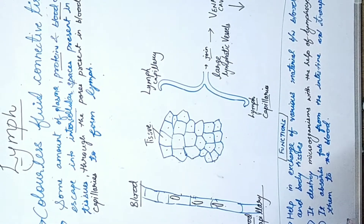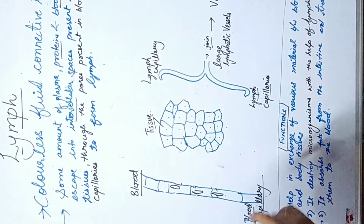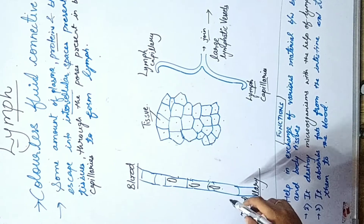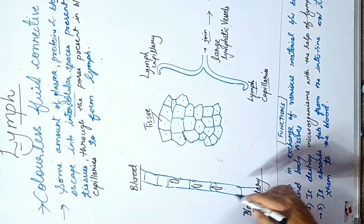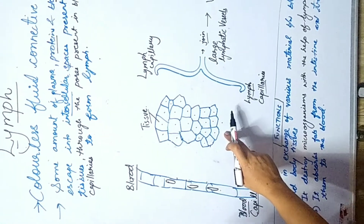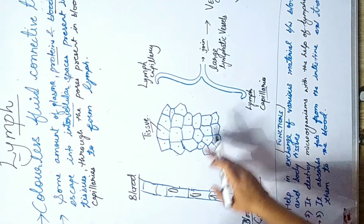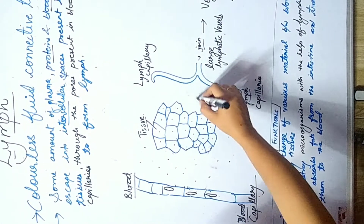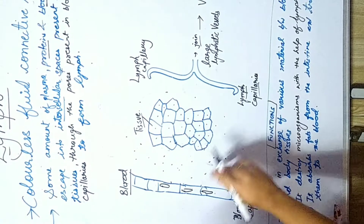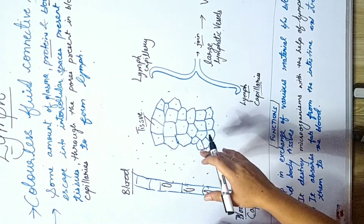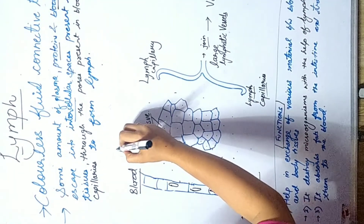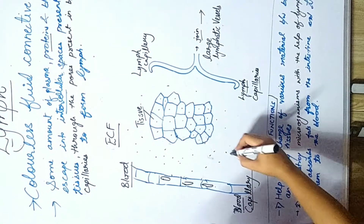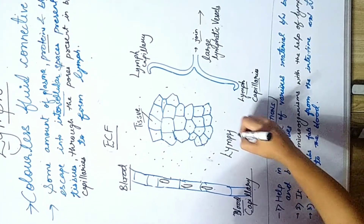Let's understand where lymph is present. Blood circulates in blood capillaries, which have the thinnest walls, allowing easy diffusion of gases and nutrients to every cell and tissue. In between the tissues and blood capillaries, there is a fluid material called extracellular fluid — ECF — because it is present outside the cells and in the spaces between them. This extracellular fluid is actually lymph.